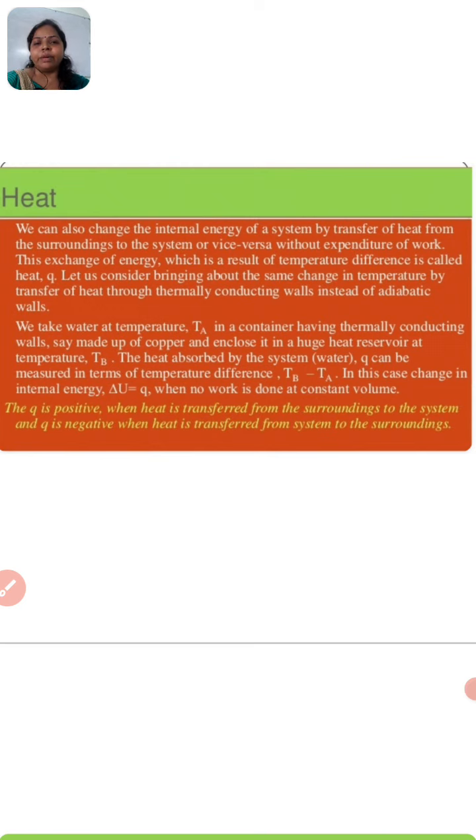We call this the change of heat energy. Now, we take an example of water at temperature T_a. When it comes to initial state, we talk about the transfer of heat to T_b. The heat absorbed by the system q can be measured in terms of the temperature difference T_b minus T_a. In this case, change in the internal energy del u, the internal energy change is represented as del q. When no work is done at constant volume, q is positive when heat is transferred from the surrounding to the system. If surrounding se system ke and heat ka transfer ho raha hai, then the value of q is positive.